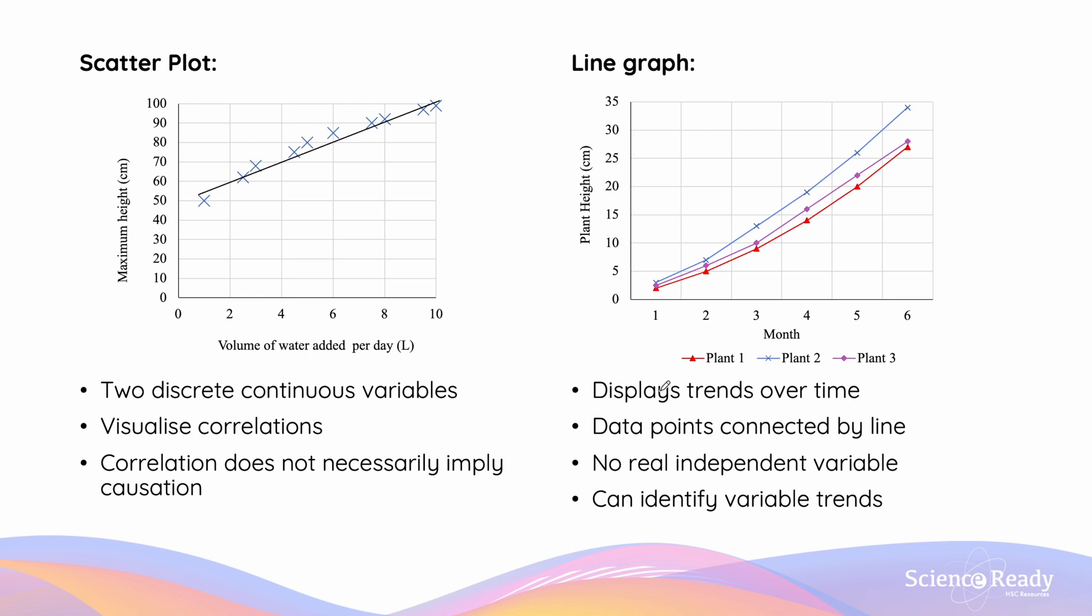Line graphs are going to help us display trends over a period of time, where the data points are connected by a line. Line graphs are used where there is no real independent variable, so in this case it's time, and it can help us identify variable changes, since we are really only looking at a single variable.